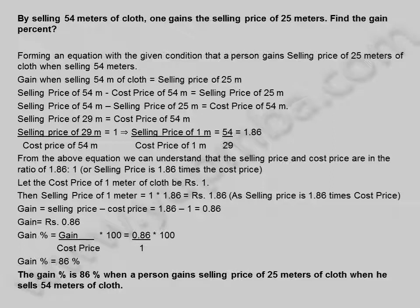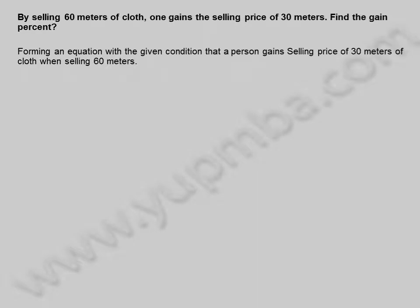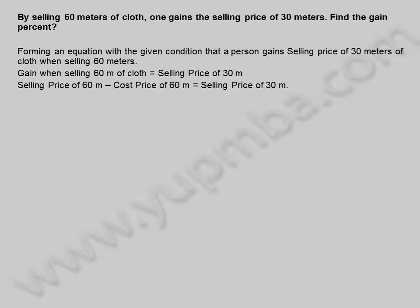Let us see another example. By selling 60 meters of cloth, one gains the selling price of 30 meters. Find the gain percent. Forming an equation with the given condition that a person gains the selling price of 30 meters of cloth when selling 60 meters. Gain when selling 60 meters of cloth is equal to selling price of 30 meters. Selling price of 60 meters minus cost price of 60 meters is equal to selling price of 30 meters.